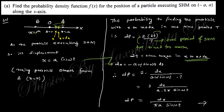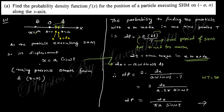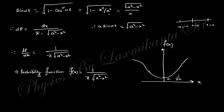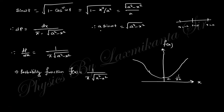Substituting dx = −aω sin(ωt) dt and putting ωT = 2π, the expressions cancel to give dP. Using sin(ωt) = √(1 − cos²(ωt)) and cos(ωt) = x/a, we get cos²(ωt) = x²/a². Substituting this, the probability density becomes dP = dx / (π √(a² − x²)).